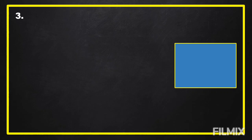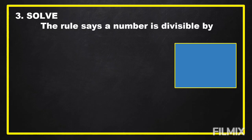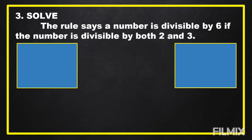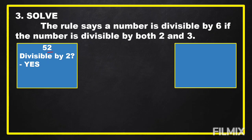Now we're going to carry out the plan and solve the problem. The divisibility rule for 6 says a number is divisible by 6 if it is divisible by both 2 and 3. Our first option is 52. Is 52 divisible by 2? Yes, because 52 ends with 2, and 2 is an even number. Is 52 divisible by 3? We're going to add all the digits: 5 plus 2 equals 7. And 7 is not divisible by 3, so 52 is not divisible by 3.